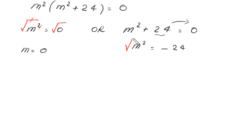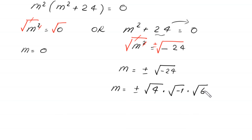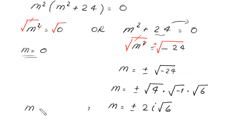Taking the square root of m² = 0 gives m = 0. Taking the square root of m² = −24 gives m = ±√(−24) = ±√(4·(−1)·6) = ±2i√6. So m = 0 or m = ±2i√6.